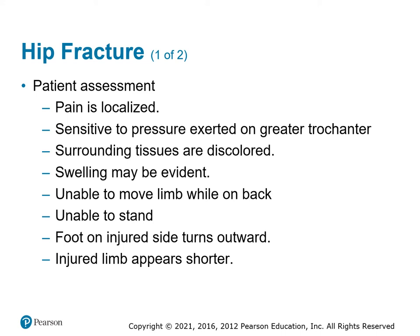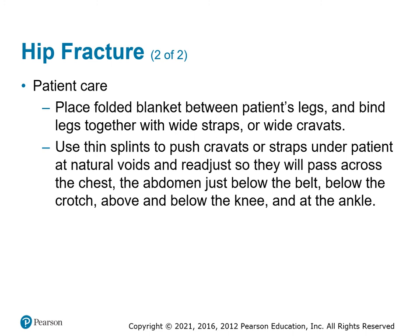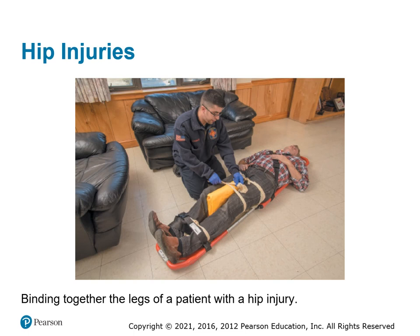With hip fractures, they're going to have localized pain, pressure on the greater trochanters, tissue that's discolored, lots of swelling, unable to move while laying on the back, unable to stand. The foot is going to be turned downward, and they're going to have an injured limb that looks shorter than the other because it's been displaced. Care: put something between the legs and tie the legs together. You can use thin splints to push cravats or straps under the natural voids and then wrap leg to leg. Put something between their legs for extra support and use binders around to hold the legs together to reduce the pain of movement.